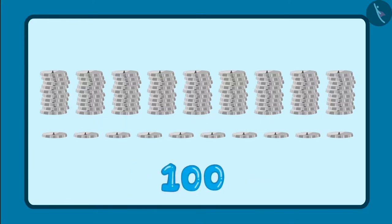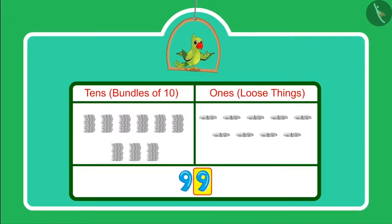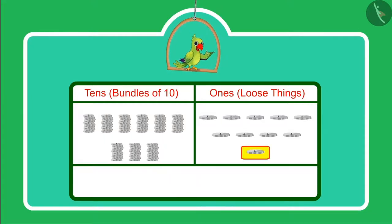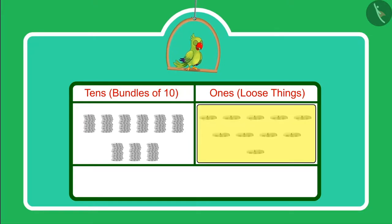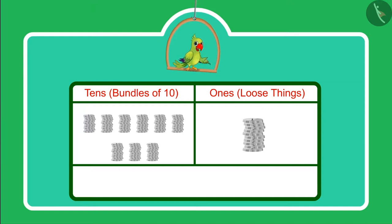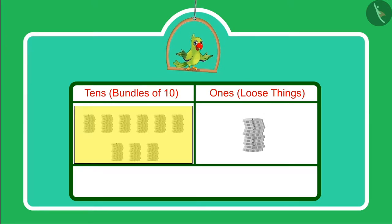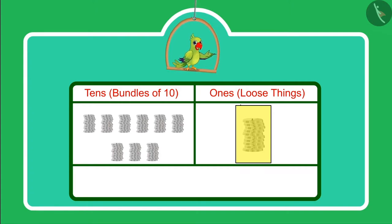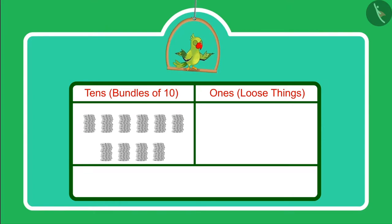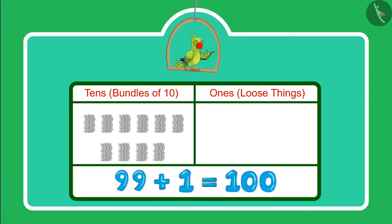Come on, let us see how. Now there are 9 ones and 9 tens. And if there is 1 more, it will become 10 coins, which means 10 ones. Together, 10 ones will make 1 ten — which means 1 more group of 10. That means earlier we had 9 tens, and now 1 ten more, so now we have 10 tens, which we call a hundred.